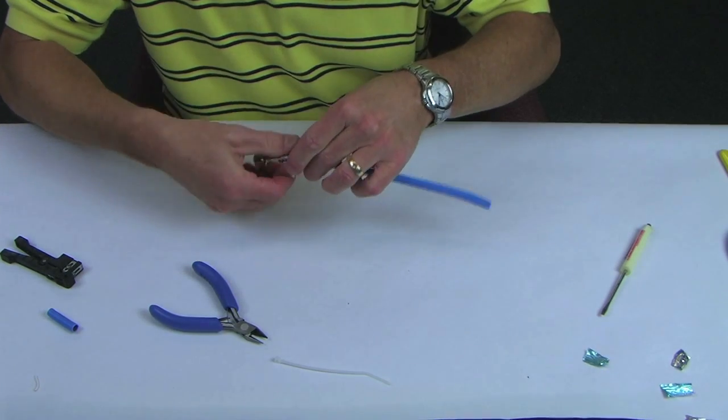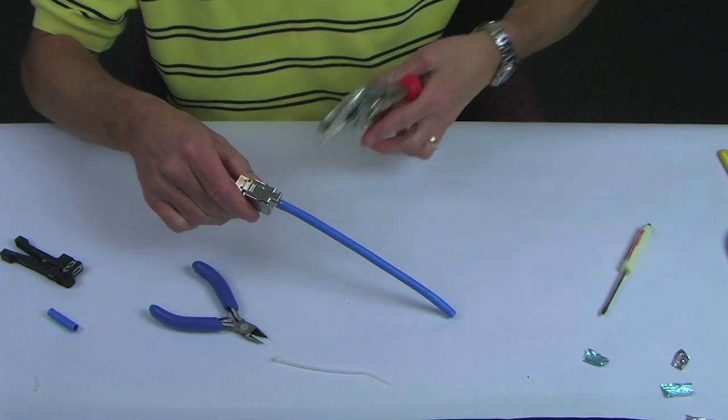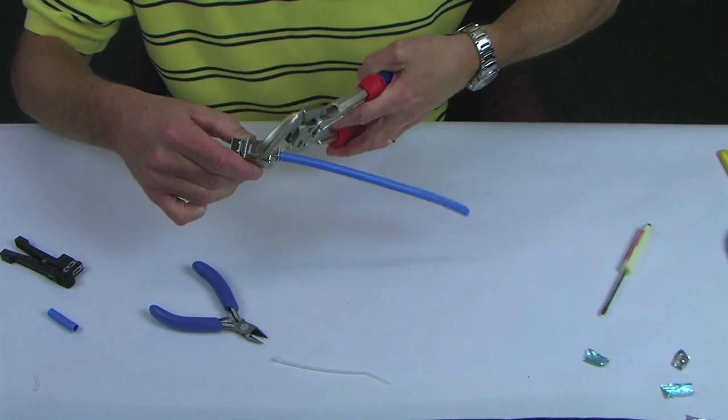Rotate the hinged cover onto connector base and squeeze the cover with toothless parallel pliers until the tabs snap securely in place.